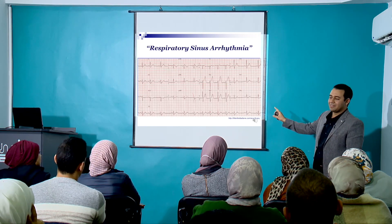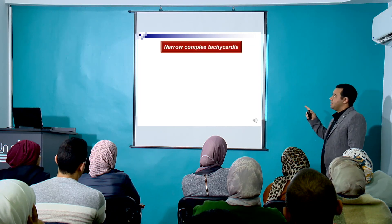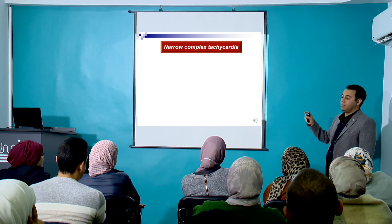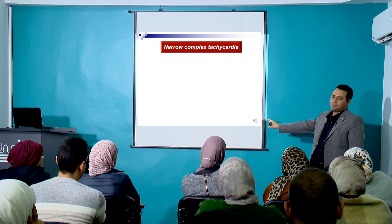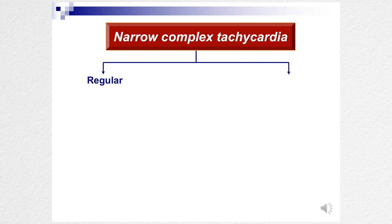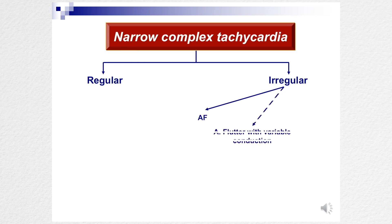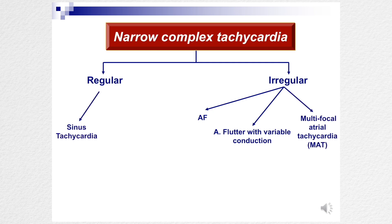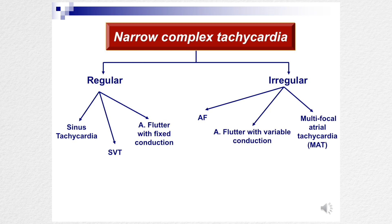So sinus arrhythmia — don't touch. Narrow complex tachycardias can be split into six major ones you must know. Three regular and three irregular. The irregular ones are AF, flutter with variable conduction, and MAT. The regular ones are sinus tachycardia, SVT, and flutter with fixed conduction. These are the six narrow complex tachycardias you must know to practice emergency medicine.